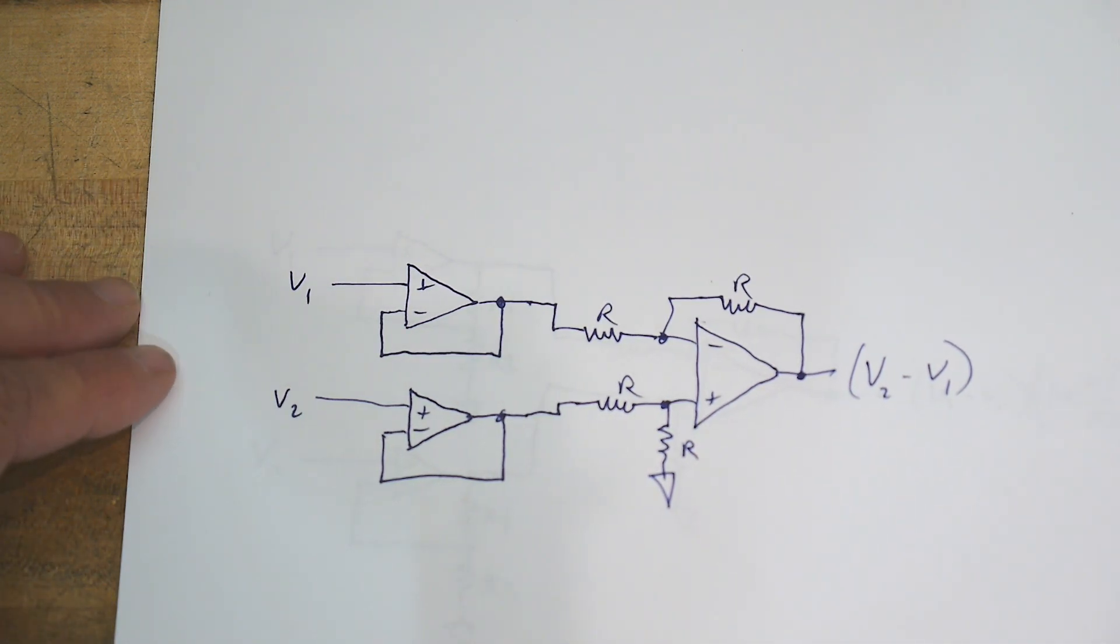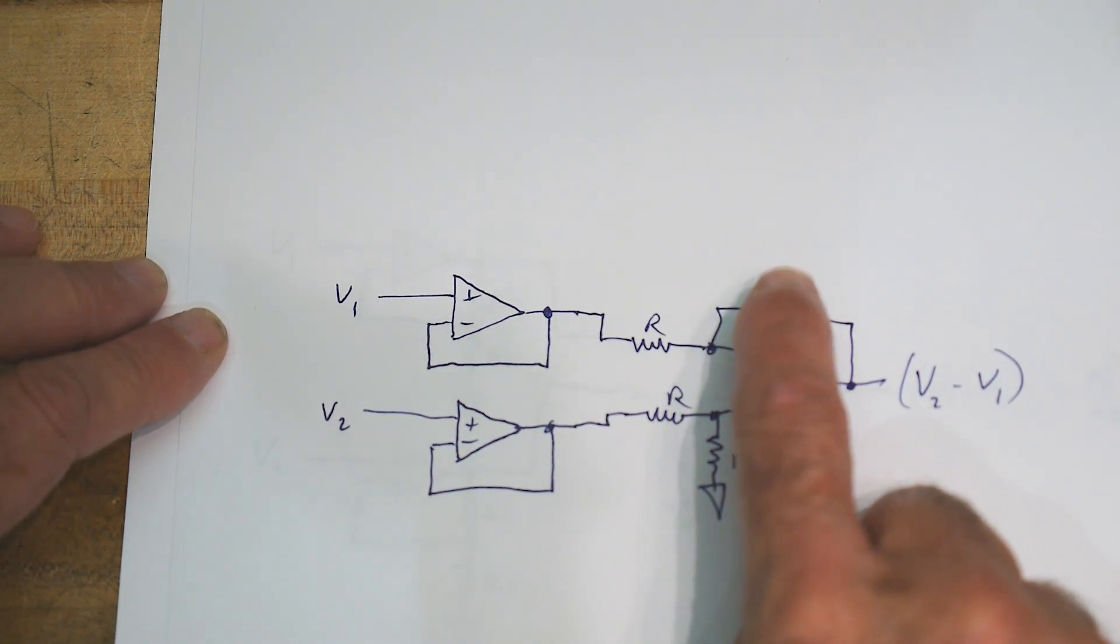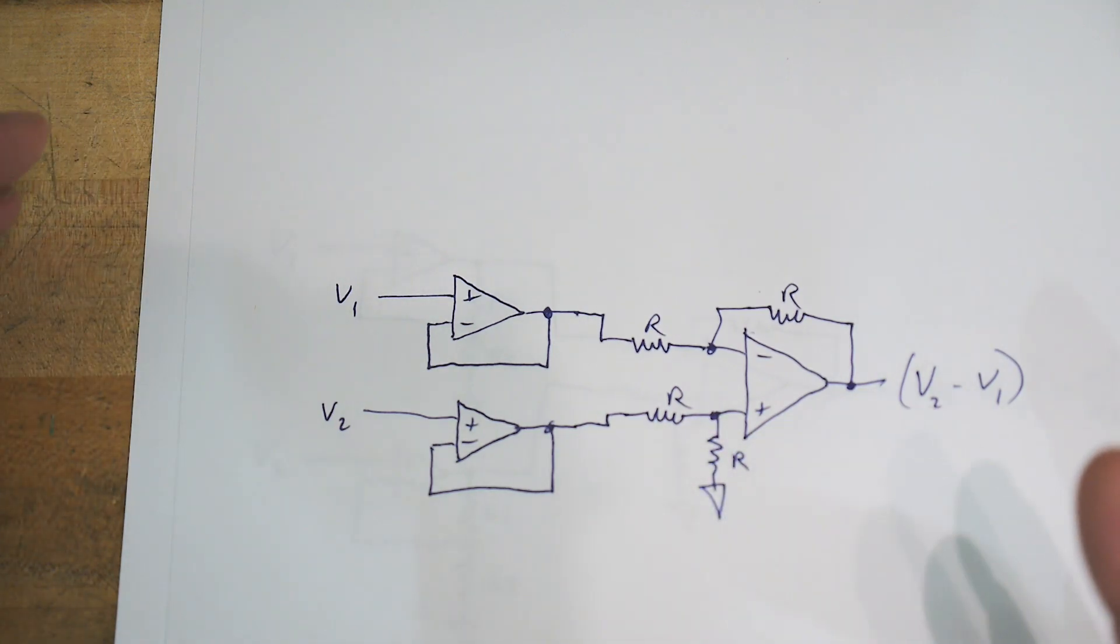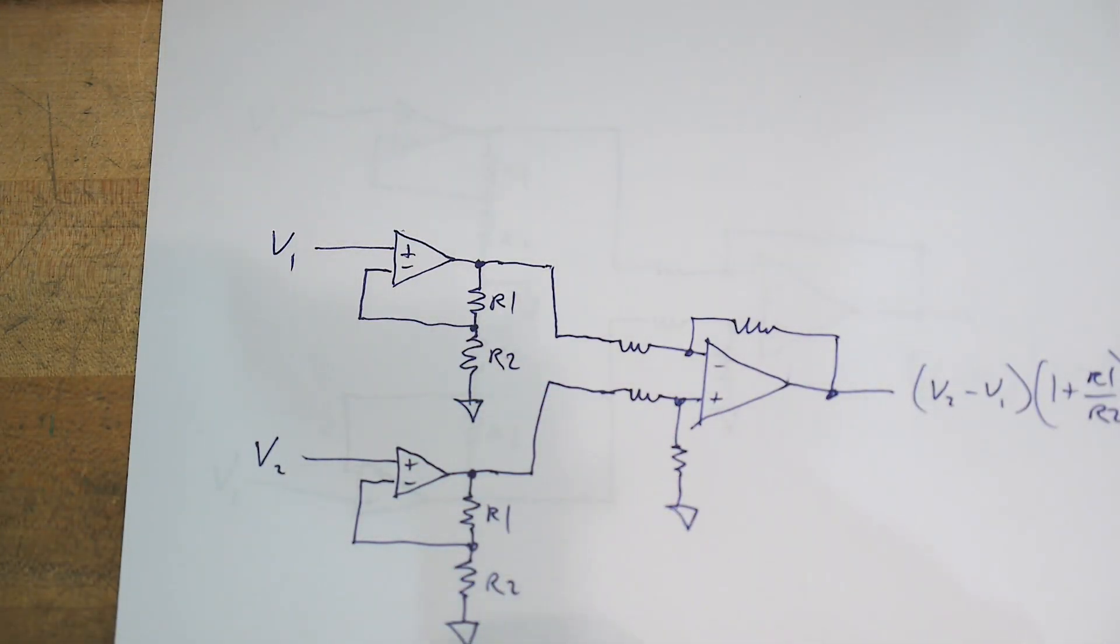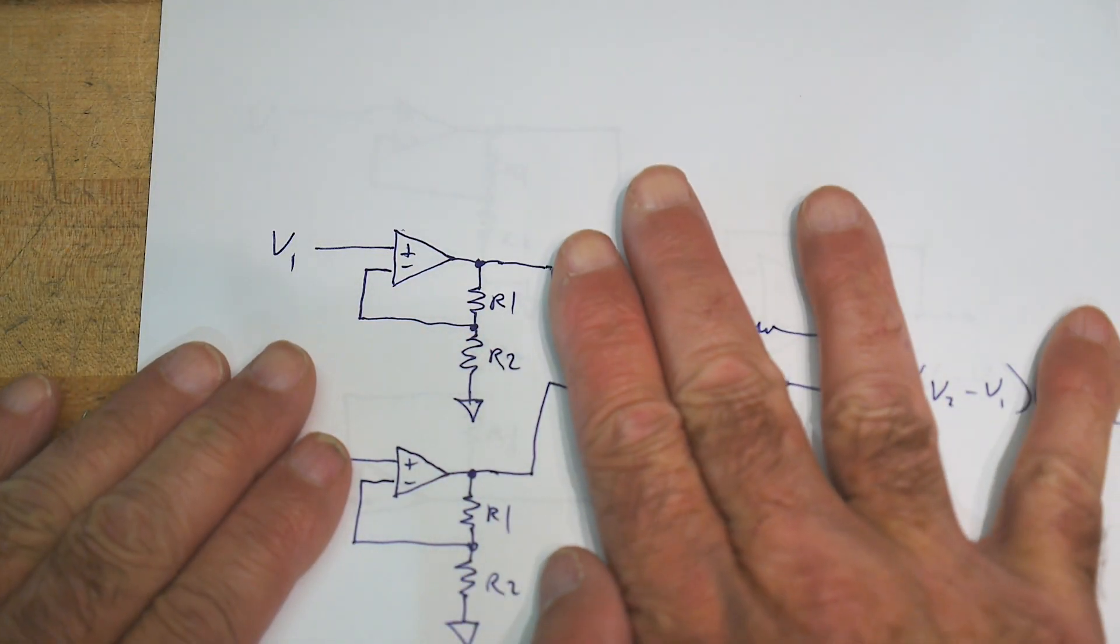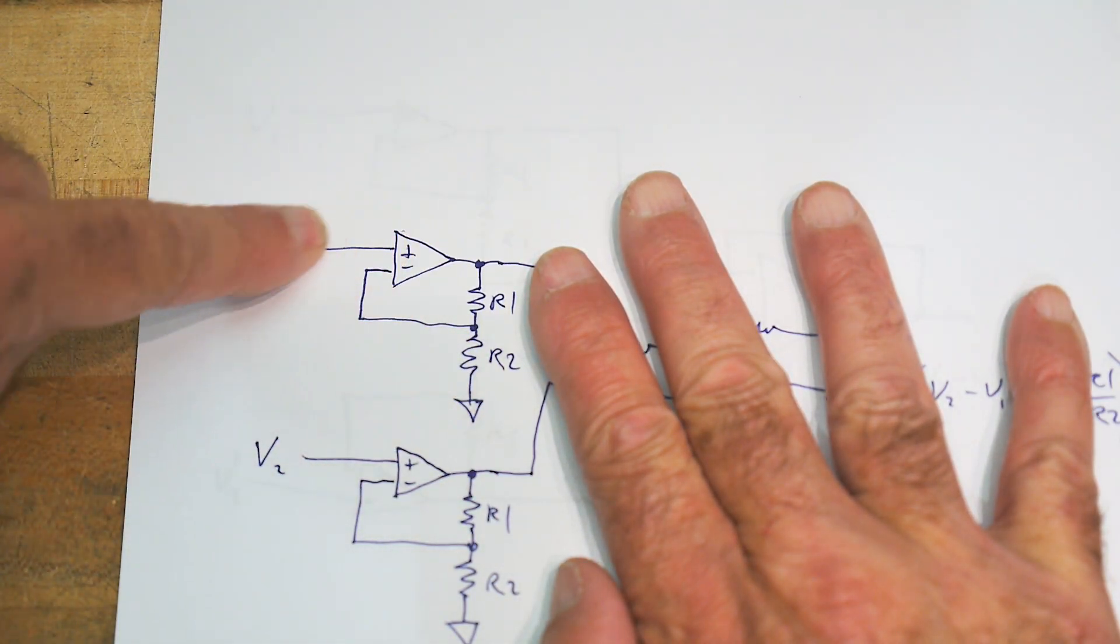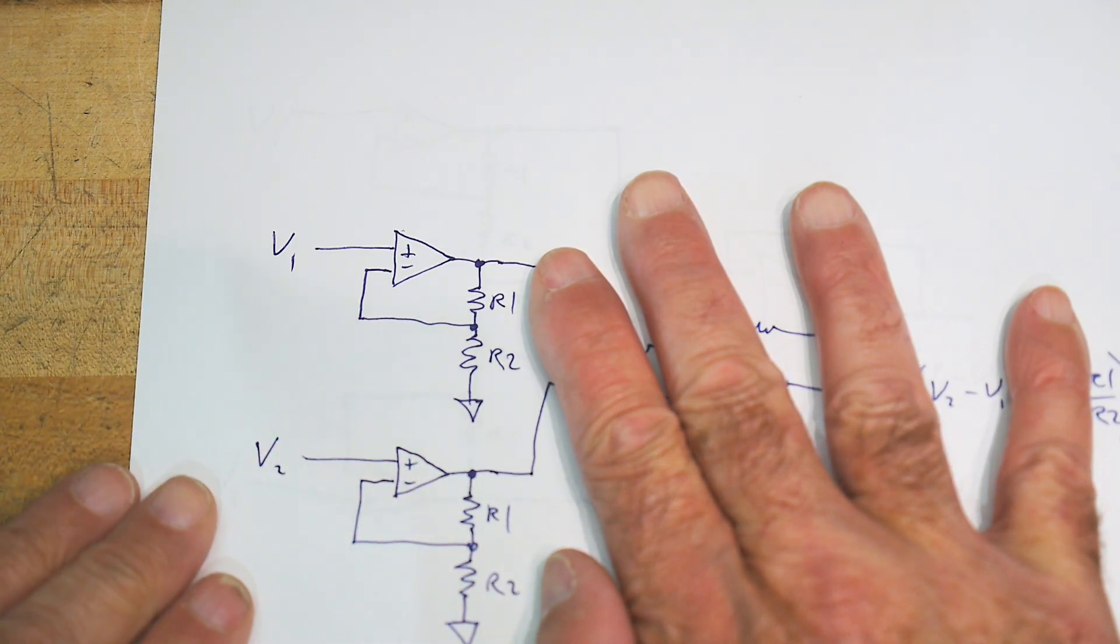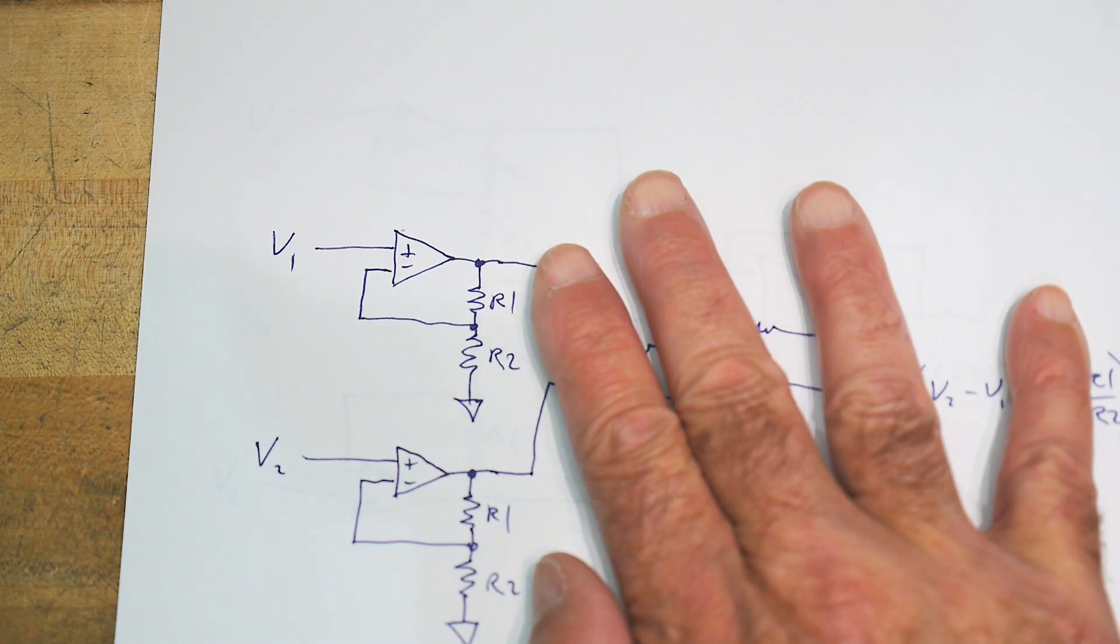What if we wanted to add gain to this circuit? We could change these values, we could increase this R and increase this R, and that would make gain in the circuit. We could also put the gain out in the front. Since these are non-inverting op amp circuits, we could create gain in the V1 stage and gain in the V2 stage, and the gain would just be 1 plus R1 divided by R2.